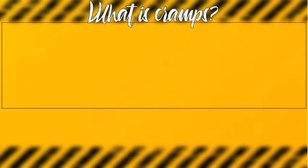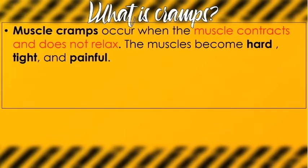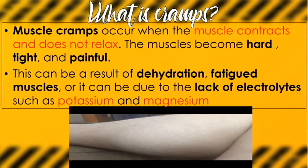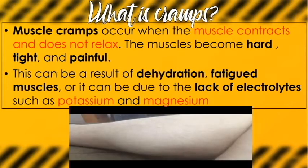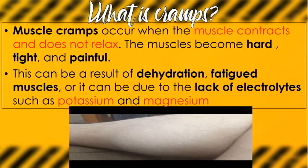Number two is cramps. Muscle cramps occur when the muscle contracts and does not relax — your muscles become hard, tight, and painful. This can result from dehydration, fatigue or overusing of muscles, and lack of electrolytes like potassium and magnesium. Electrolytes are found in energy drinks like Gatorade, Powerade, and Pocari Sweat — that's why athletes drink them. This prevents lack of electrolytes in the body and helps avoid cramps.